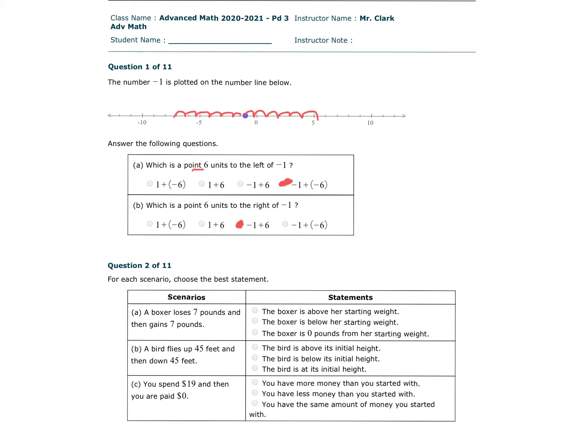Okay, question 2. For each scenario, choose the best statement. A boxer loses 7 pounds and then gains 7 pounds. So first he goes down 7 and then he goes up 7. So where is he? He's right back to where he started. He's 0 pounds from his starting weight.